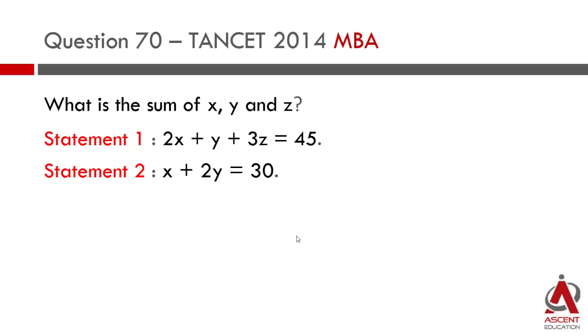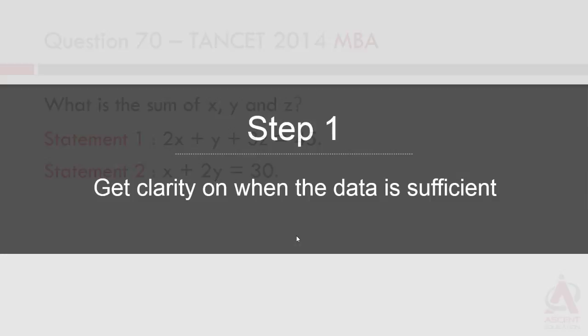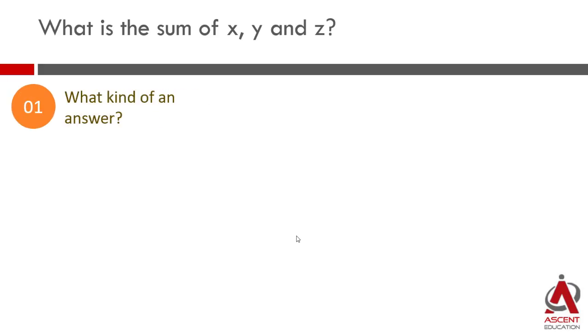As with any question that you have solved till now, let us quickly get clarity on when the data is sufficient and then we will move on to evaluating the statements. What kind of an answer will you get for this question? This question is, what is the sum of x, y and z? The answer is finally going to be a number which is going to be the sum of these three numbers.